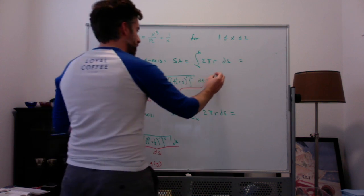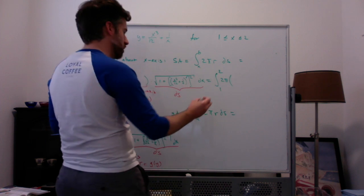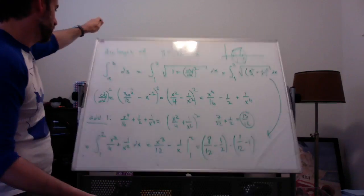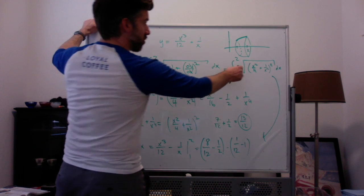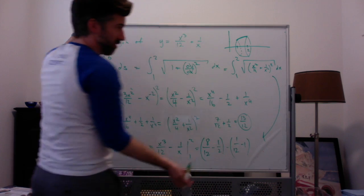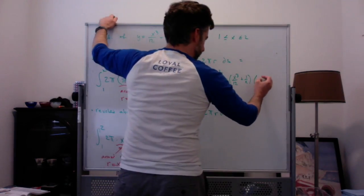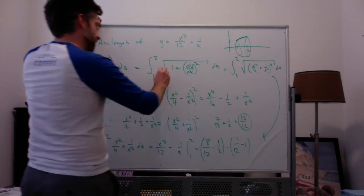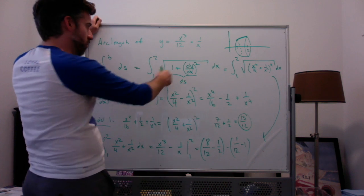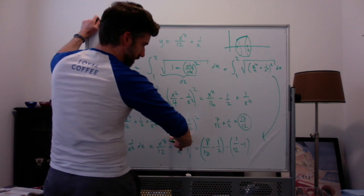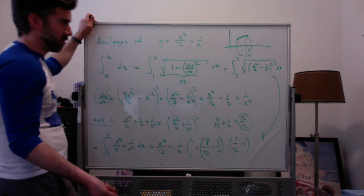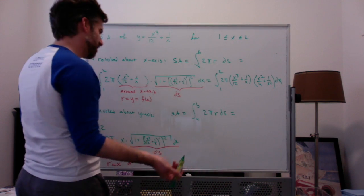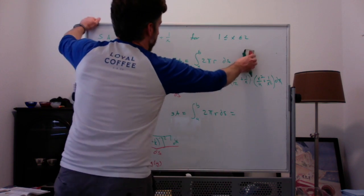In this case it equals the integral from 1 to 2 of 2 pi times the function x cubed over 12 plus 1 over x, times the square root of 1 plus all this. We already know that square root simplifies to x squared over 4 plus 1 over x squared. So ds is the square root of 1 plus the derivative squared, which equals x squared over 4 plus 1 over x squared. Going around the x-axis, you get the integral of 2 pi times your function times ds, and then it gets a little gross. Bringing out the 2 pi and multiplying through: I get x to the 5th over 48.